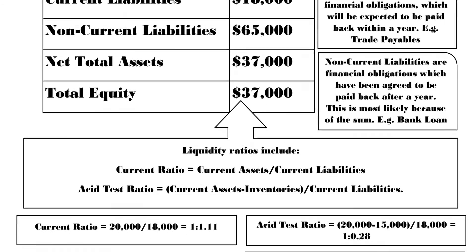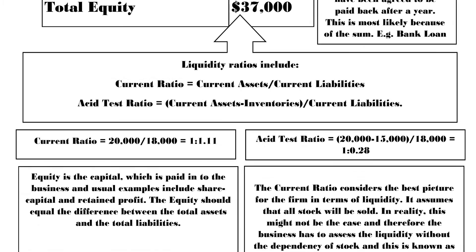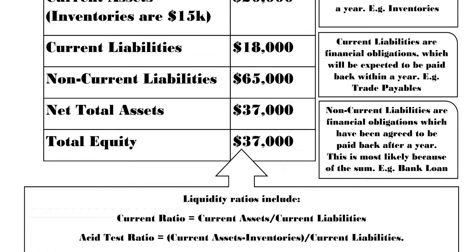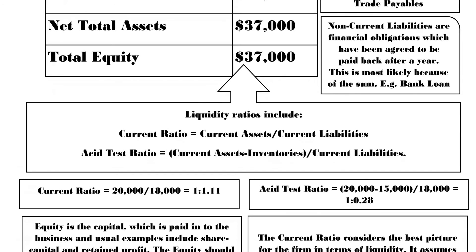If the exam paper asks you to calculate liquidity ratios, make sure you do your current ratio and your acid test ratio. The big difference is that the current ratio includes stock, while the acid test ratio doesn't. The current ratio is current assets divided by current liabilities. In the example here, current assets is 20,000 and current liabilities is 18,000, giving us 1.11. You can express it as a ratio or simply as a decimal. The acid test ratio deducts inventories from current assets.